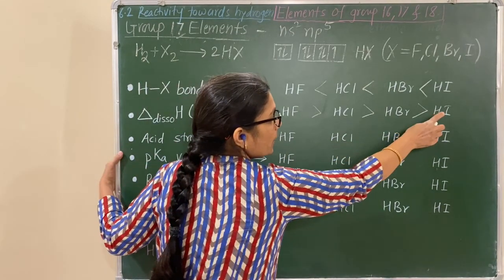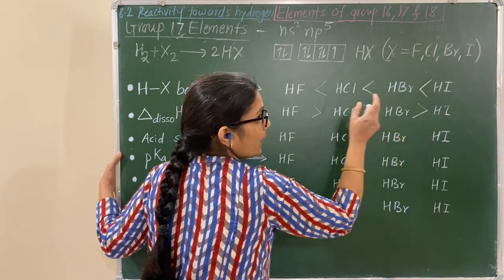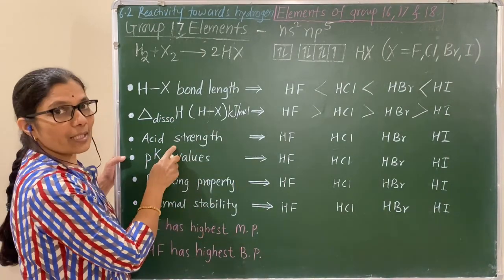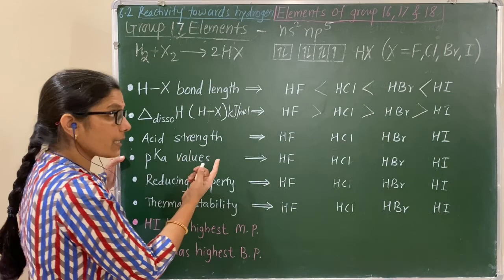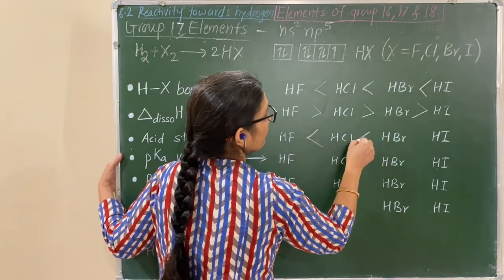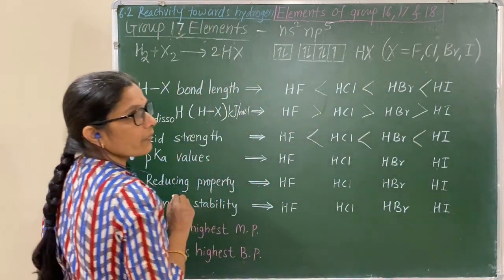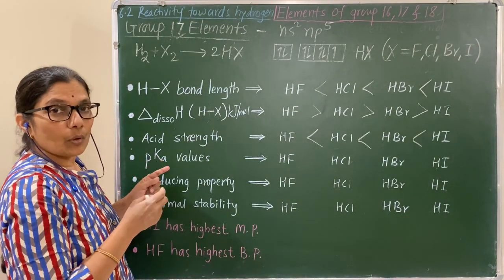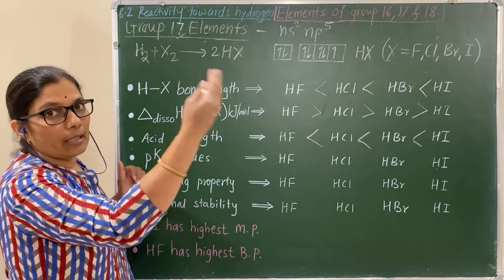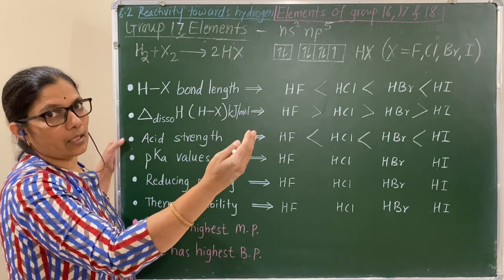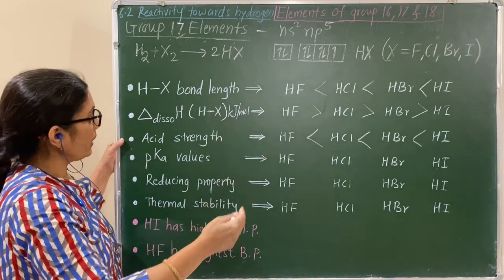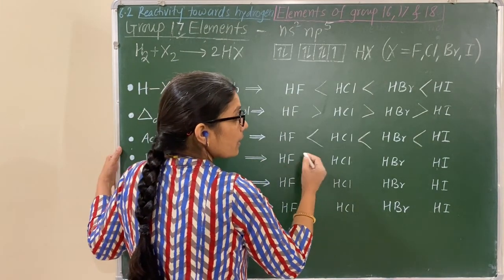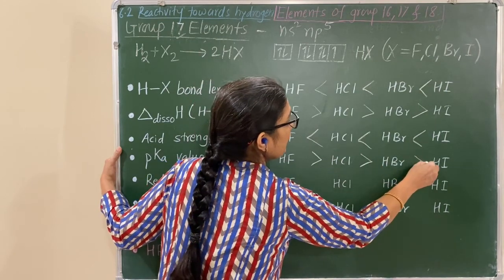If the bond breaks easily, when dissolved in water it gives H+ ions easily, so acid strength increases down the group. pKa values and acid strength are inversely proportional — therefore pKa values go on decreasing down the group.